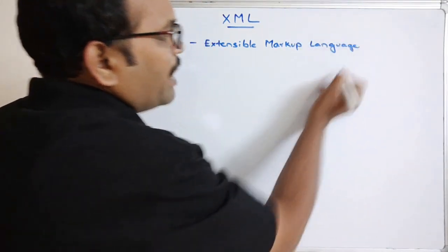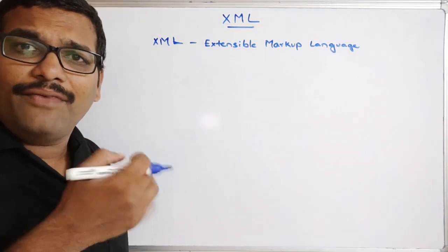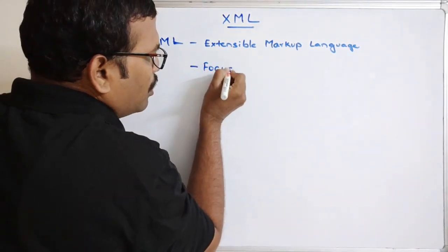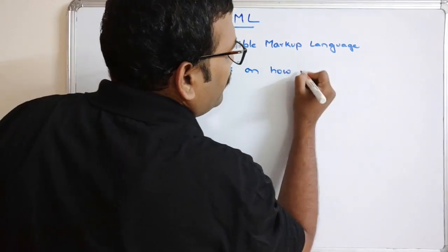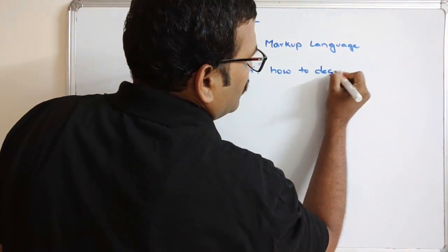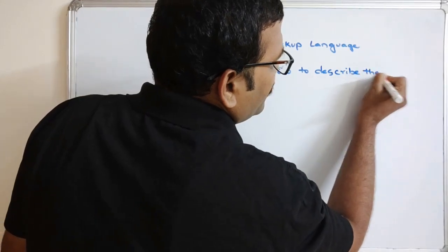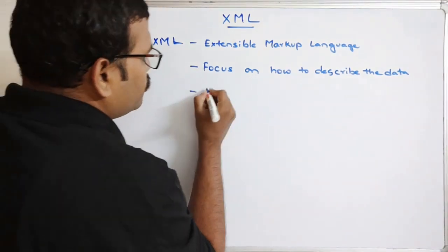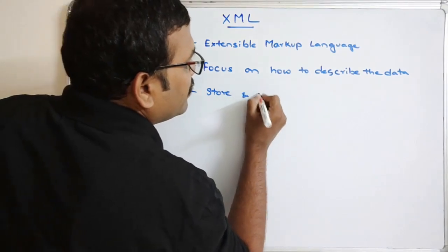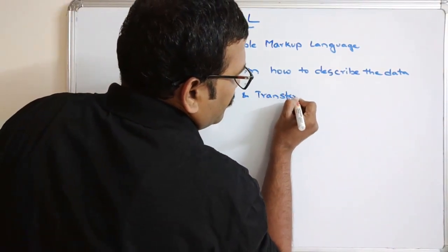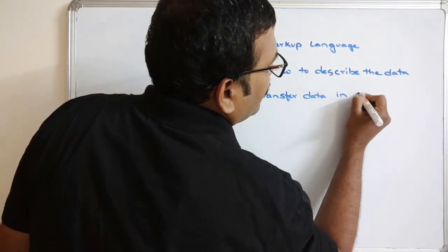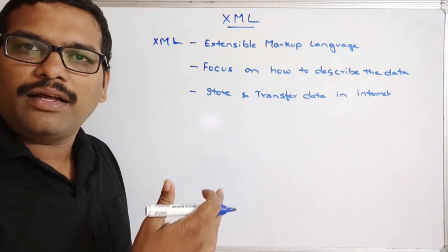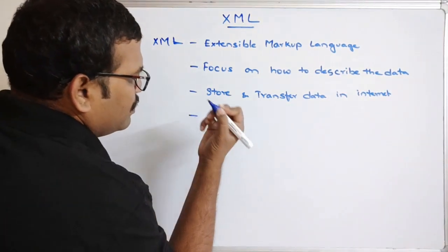XML is similar to HTML but with a slight difference. XML focuses on how to describe the data — not on the appearance. It is mainly used to store and transfer data on the internet.